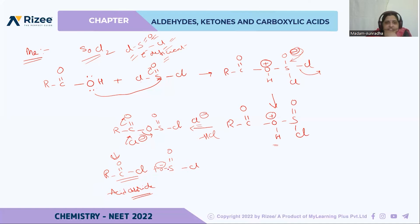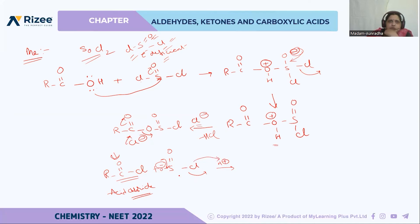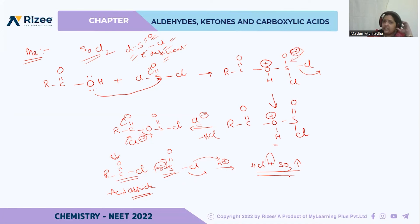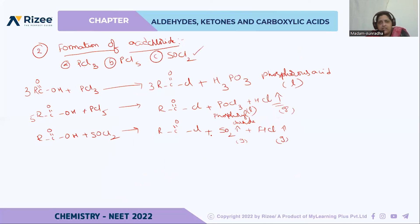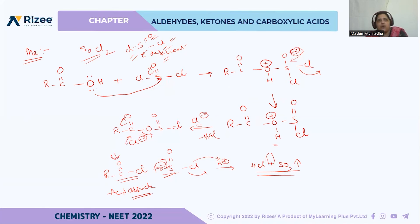As chlorine is a good leaving group, it goes out very easily, and the electrons come in between sulfur and oxygen. The Cl minus goes to the H to form HCl, and SO2 escapes — both are gases. So with thionyl chloride, the products are acid chloride, HCl, and SO2, with both byproducts being gases. This distinguishes the reactions of carboxylic acid with PCl3, PCl5, and SOCl2.